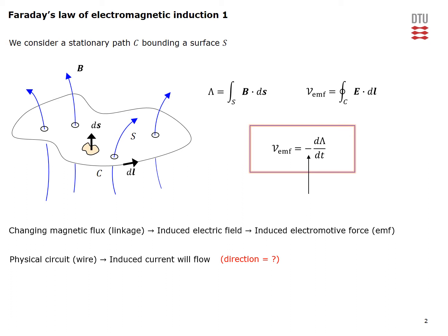To illustrate this, consider the case where the field in this direction increases as a function of time. The time derivative of the flux linkage through the loop is positive, meaning the induced electromotive force is negative. This means the electric field induced along the path is predominantly in the direction opposite to our dL element, giving rise to an induced current in the direction sketched on the figure. This current produces a flux that opposes the increase of the original flux.